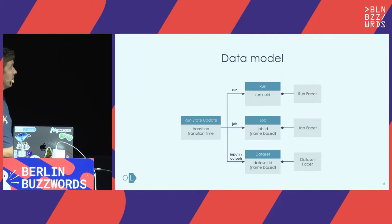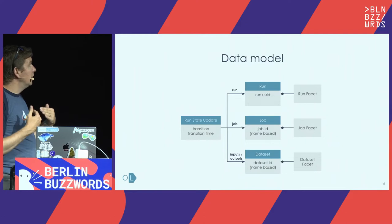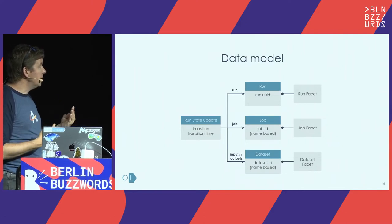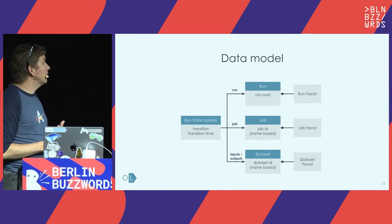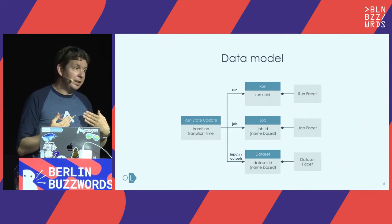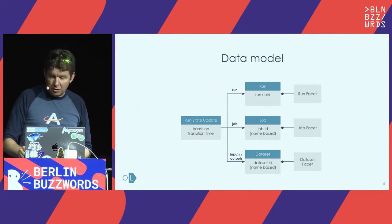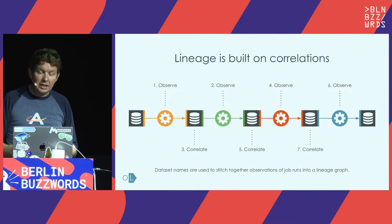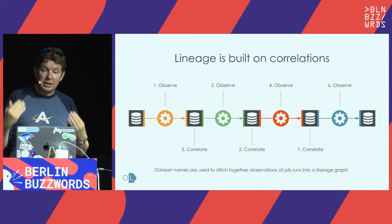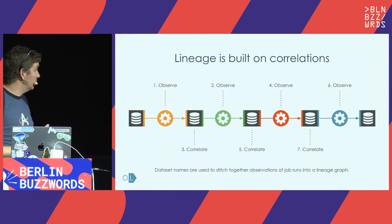For each of those elements in the model, it's extensible with the notion of facets. The data world is diverse — there are lots of different ways to define a data set or job, so facets enable providing more specialized metadata. The way lineage is built from those events is by correlating information — we observe every transformation of data, they always have input and output data sets, and we stitch the lineage back together by ensuring consistent naming and identification of those data sets.